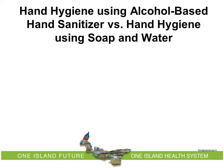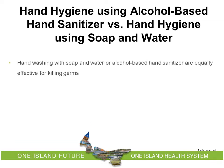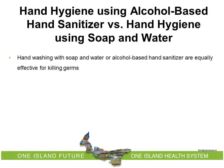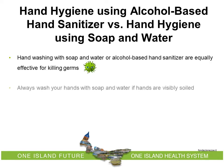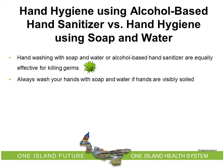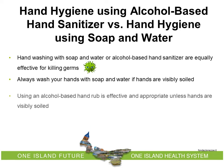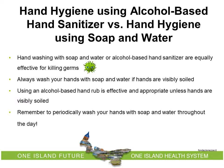Hand hygiene using alcohol-based hand sanitizer versus hand hygiene using soap and water. Both methods are effective and appropriate for killing germs. Always wash hands with soap and water if hands are visibly soiled. If hands are not visibly soiled, it is still suggested to wash with soap and water throughout the day. Alcohol-based hand rub may not be appropriate for facilities housing residents with alcohol dependency; in that case, use an equally effective hand sanitizer or soap and water.